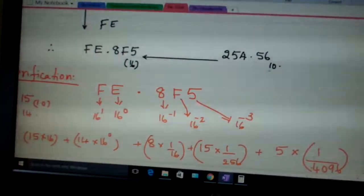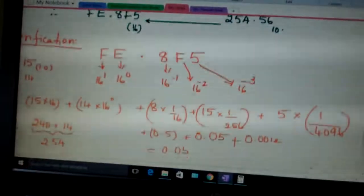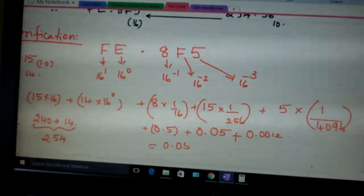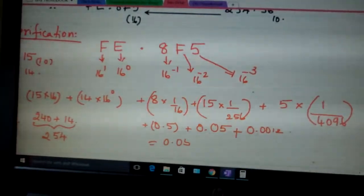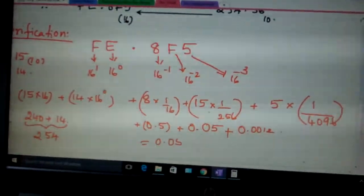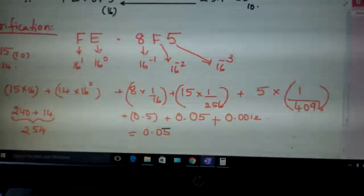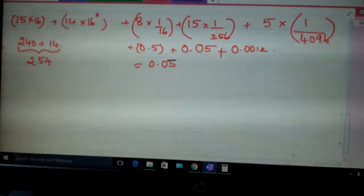Which is nothing but 254.56 in the decimal. So once again the verification. This is 16 power 0, 16 power 1 are the weights. Minus 1, minus 2, minus 3. This on simplification is yielding this value here. So write them together is what you are getting.